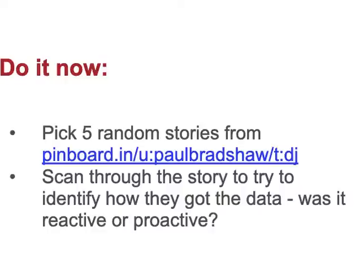A good exercise to do at this point is to pick five random stories from my bookmarks on Pinboard. Whenever I come across a data journalism story I might want to look back at in the future, I bookmark it on Pinboard using the tag 'DJ' for data journalism. I also use that tag for anything data journalism related, so you'll find a lot of other material on there. You'll probably have to look around and ignore pieces of research or videos about data journalism. Find five random stories and look through them to try to identify how they got the data — sometimes it will be explicit, saying they sent FOI requests or got data from a particular organisation, and they might even link to it. Sometimes you might have to imagine and guess. Then discuss what you found on the Slack channel for this module.